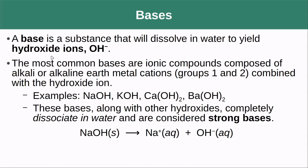Now let's talk about bases. A base is a substance that will dissolve in water to yield hydroxide ions — the negative OH species. The most common bases are ionic compounds composed of alkali or alkaline earth metal cations combined with a hydroxide ion. Examples include sodium hydroxide, potassium hydroxide, calcium hydroxide, and barium hydroxide. Group one metals have one hydroxide ion; group two metals have two hydroxide ions to balance the charge. These bases completely dissociate in water and are considered strong bases, just like we had strong acids.